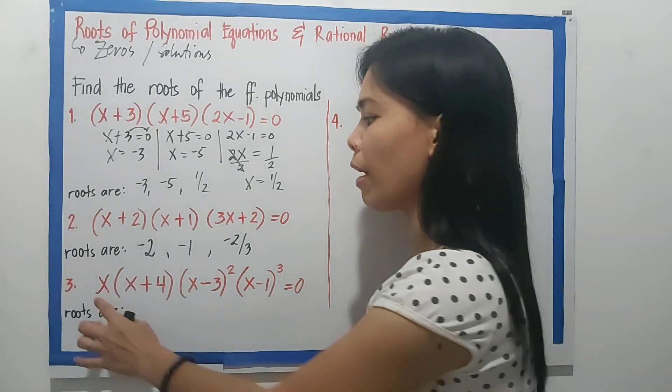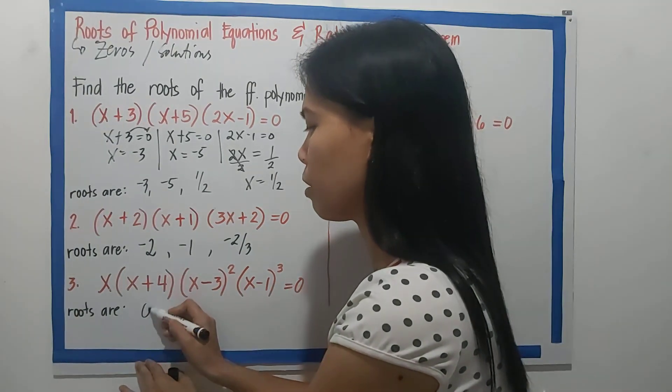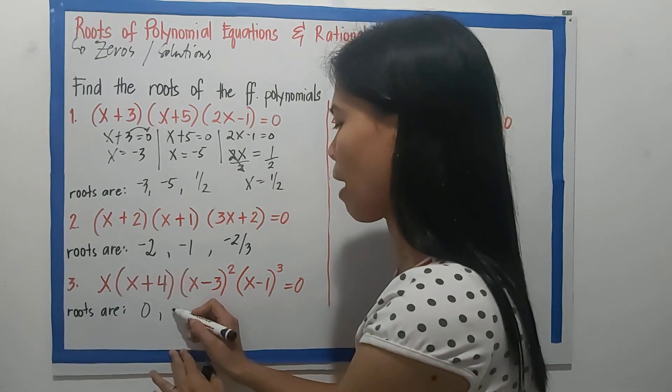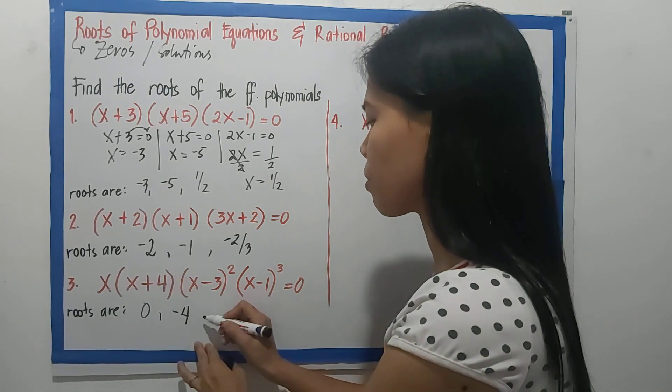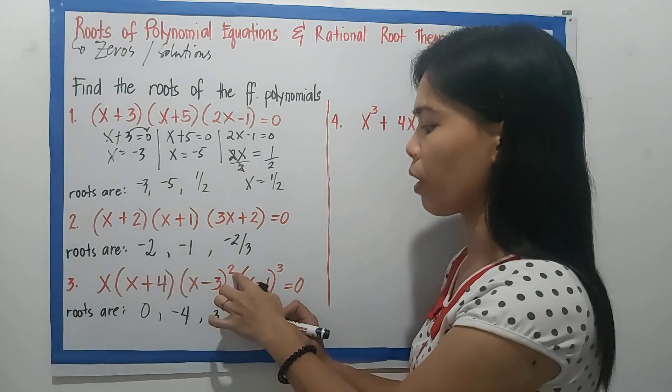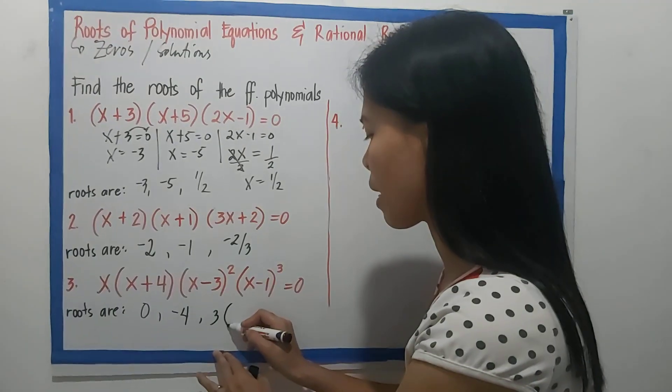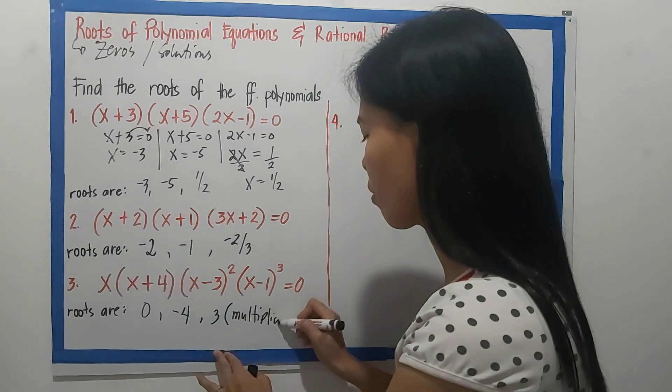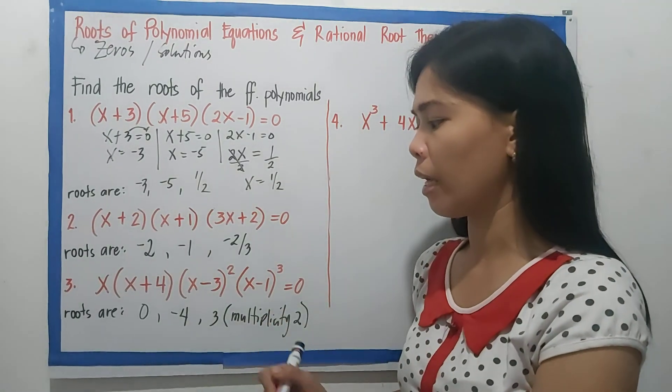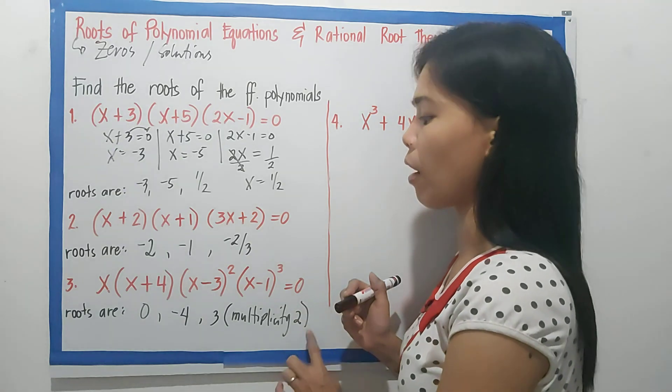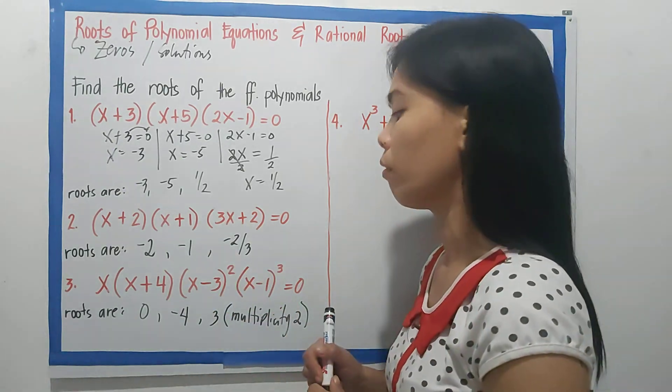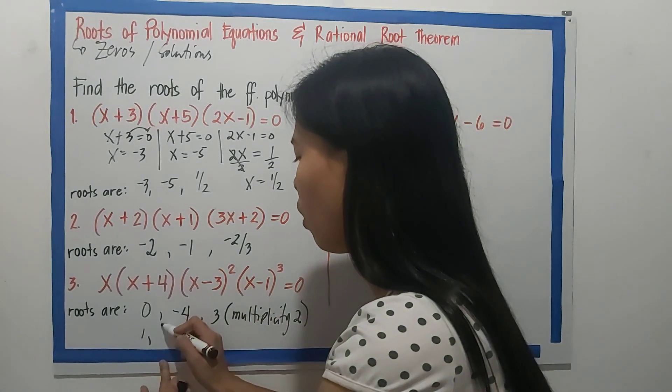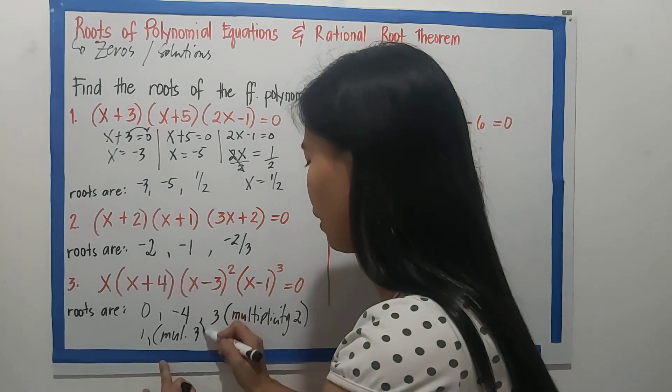For the third example, we have x. So the first root is 0, because x=0. So x+4, we have -4. x-3, we have positive 3. But we have a square here on top of the factor. So we can say that this is 3 with multiplicity of 2. That means x-3 became a factor of our polynomial twice. And for the last root, we have x-1. So that's positive 1 with multiplicity of 3.